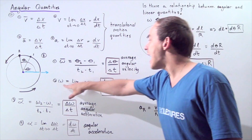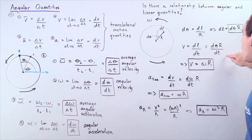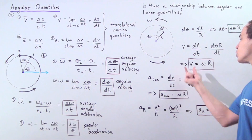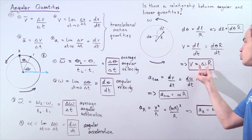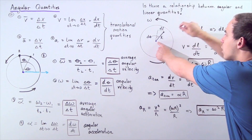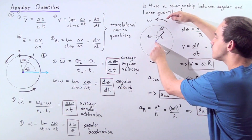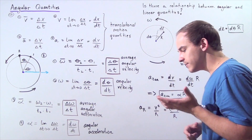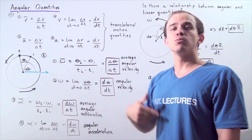We can plug in omega for D theta over DT and get the relationship: instantaneous velocity equals instantaneous angular velocity times R, or v equals omega times R. This means as the point moves further from the axis of rotation, the instantaneous velocity at that point increases. If it moves closer, the velocity decreases.